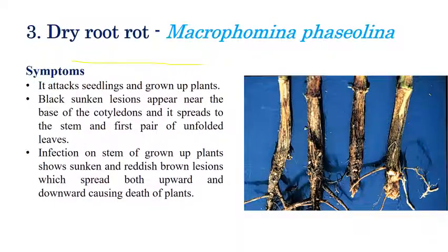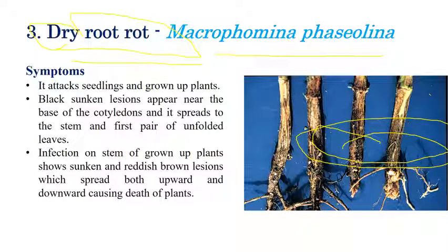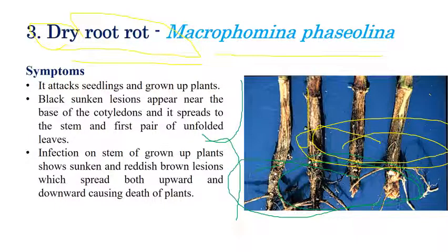The next disease is dry root rot, caused by Macrophomina phaseolina — the name itself indicates that roots become completely dry and rot in later stages. Infected stems show reddish-brown color spots on leaves, and sometimes on stem regions. The disease spreads both upward and downward from the point of infection. Looking at the roots, they completely rot and can be easily pulled out because they lose stability to hold the plant.